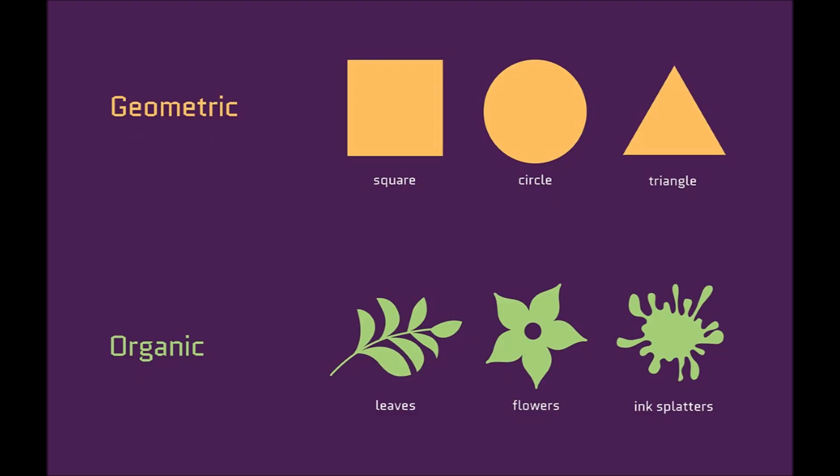Here's another diagram that shows the difference between geometric and organic shapes. Again, geometric shapes tend to be straight edged because of its perfect measurement. The circle that you see here is a perfect circle making it a geometric shape.